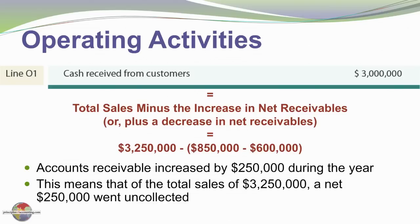By reference to the balance sheets — the beginning and ending balances — ending accounts receivable was $850,000 and beginning accounts receivable was $600,000. We experienced a $250,000 increase in accounts receivable during the period, meaning a net $250,000 went uncollected. So of the $3,250,000 in sales, only $3 million was collected: total sales minus the increase in net receivables.